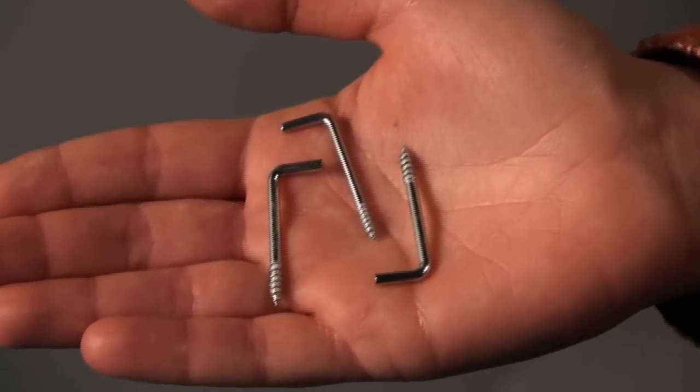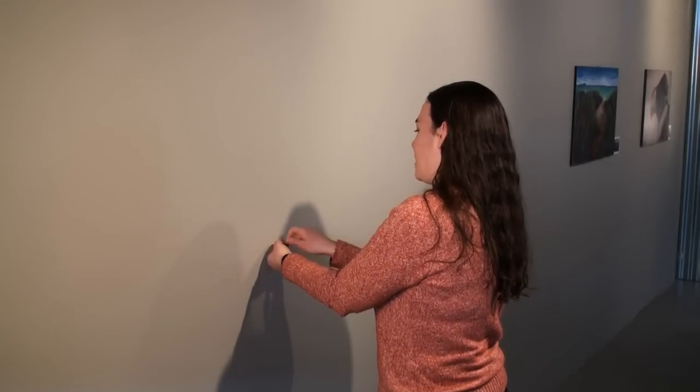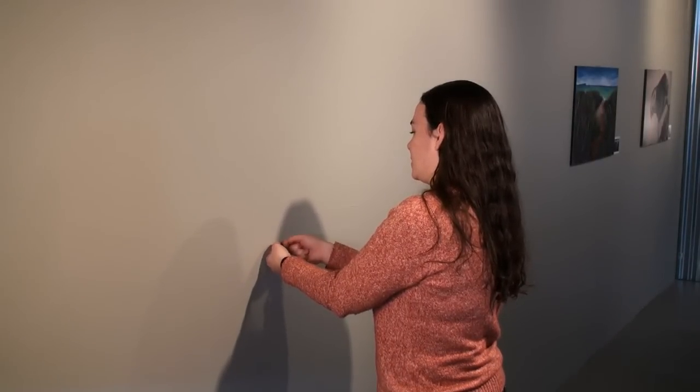The first method involves using screw hooks. Depending on your wall, you'll either be able to screw them directly into the wall or you might have to drill pilot holes first. In my case, I had to drill some pilot holes.